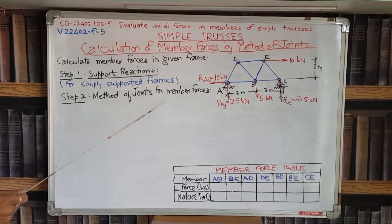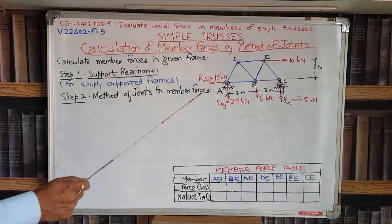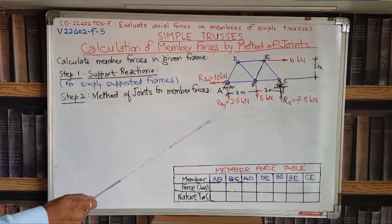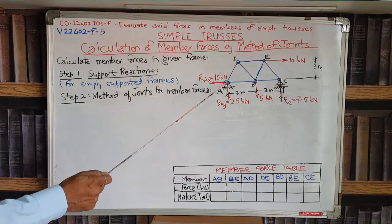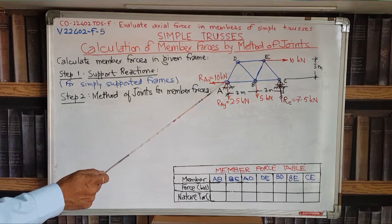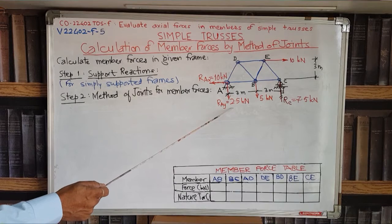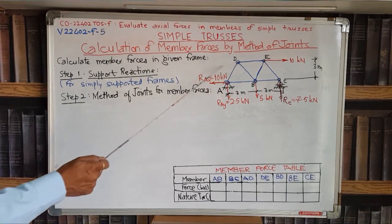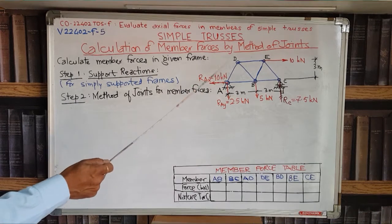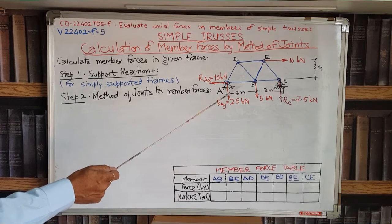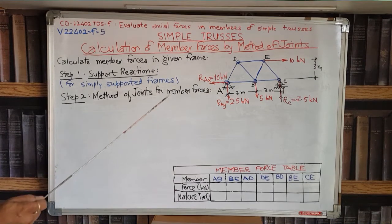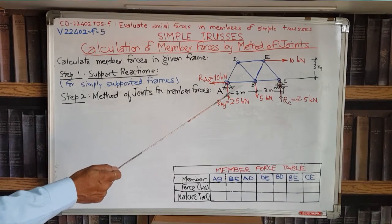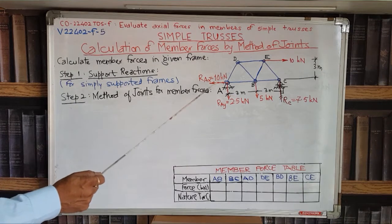Now we will go for method of joints. What we are doing in this method is selecting one joint and drawing its free body diagram — showing all the forces developed at that joint. For example, at joint A, there is one RAX force and another RAY force as reaction forces. When we isolate joint A, members AD and AB will get cut. Once they get cut, the forces in those members will act on joint A. So at joint A there will be four forces in total.